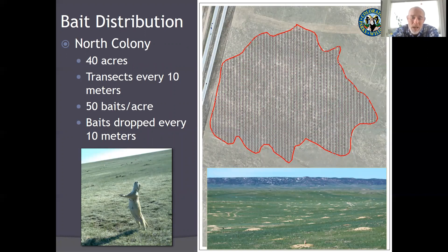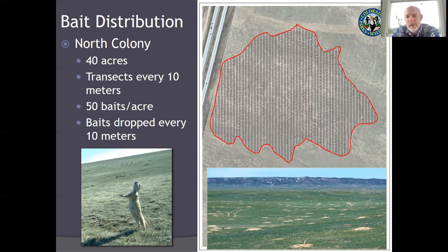To give you a sense of how we did some of this work: the red polygon is a 40-acre prairie dog colony, and all the straight black lines are GIS-generated transects 10 meters apart. We would walk along these transects with a zip-lock bag full of baits and drop baits every 10 meters. It was a lot of work, but for this original startup field trial that's how we did it — each dot on the map represents a bait dropped in the landscape.